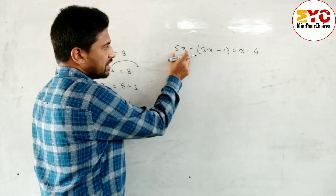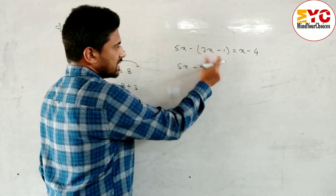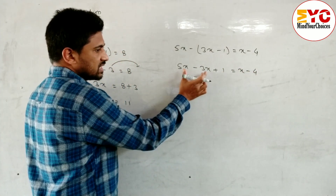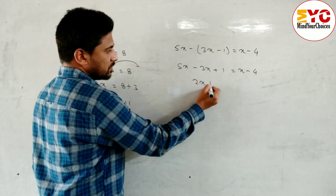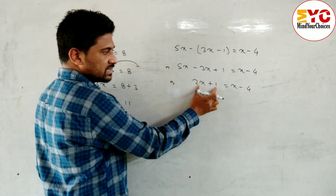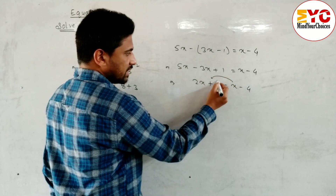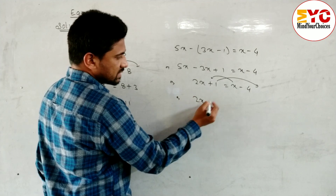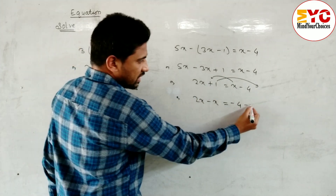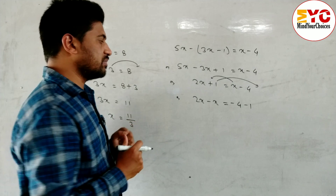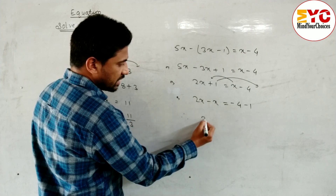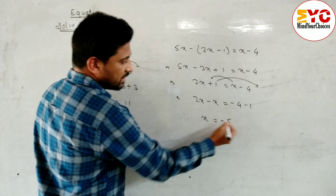Look at next. First of all open the bracket: 5x minus 3x, minus minus plus 1, is equal to x minus 4. Now 5x minus 3x — these two are like terms, so we can subtract: 2x plus 1 is equal to x minus 4. After this we have to arrange like terms. So x we have to take to the front and 1 at last. We can write 2x minus x is equal to minus 4, and if here is plus 1 we have to write minus 1. Now 2x minus x when you subtract we get x is equal to minus 4 minus 1, which will be minus 5.